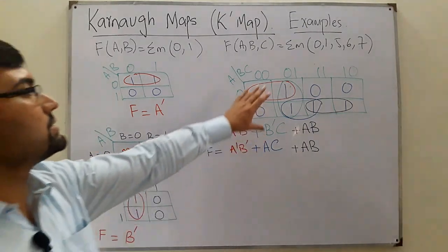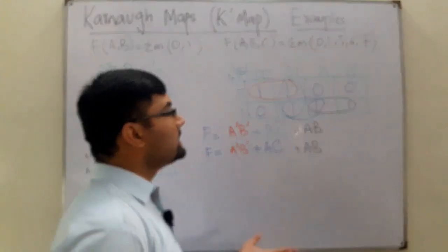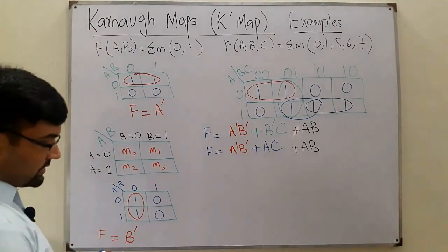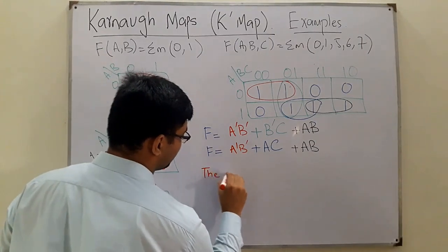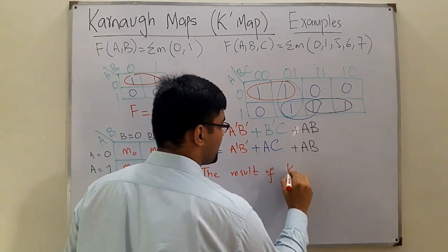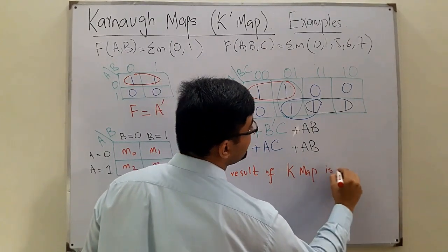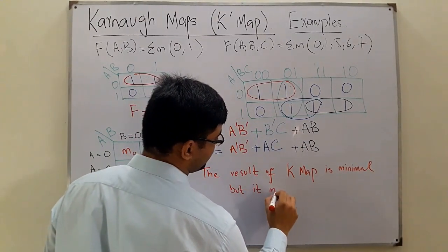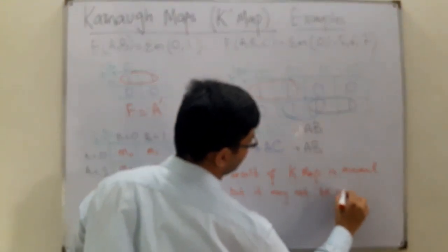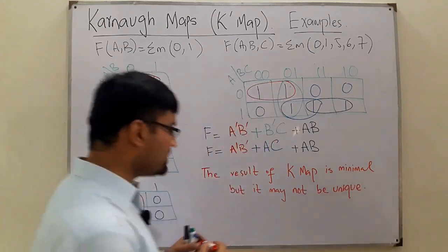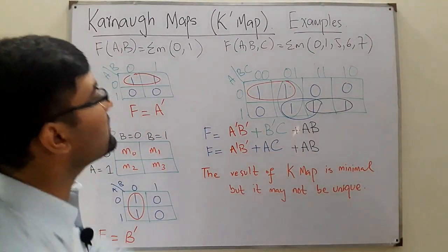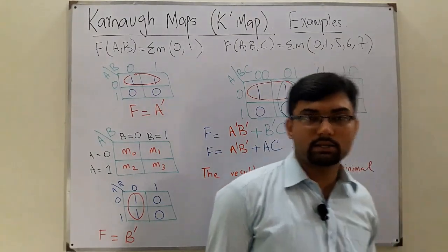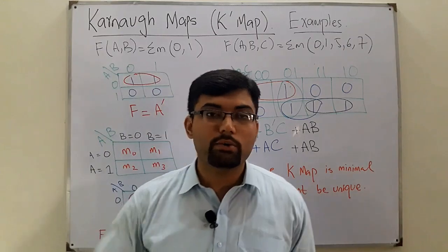So from the same K-map, one person grouping one way gets a different minimal expression than someone grouping another way. This leads to an important conclusion: the result of a K-map is minimal, but it may not be unique. One person can have one minimal form and another person can have another. These are enough examples for today. See you in the next lecture. Take care of yourself and everyone around you. Goodbye.